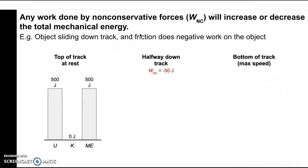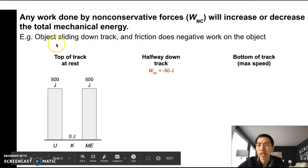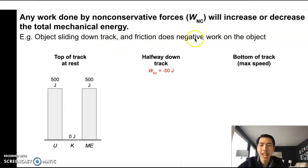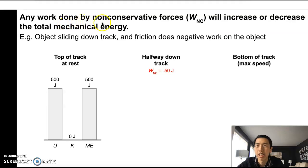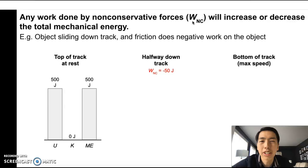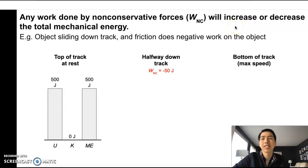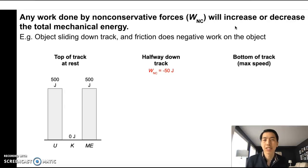What happens if there is friction? We're going to add friction here — same situation, an object sliding down a track, and friction is going to do negative work on the object. So this is the lesson today. Any work done by non-conservative forces — I'll use the symbol W subscript NC — such as friction and air resistance, will increase or decrease the total mechanical energy. If you have some other kind of force doing work on the system, it's either going to increase or decrease the number of joules. If the work done by non-conservative forces is negative, it's going to decrease the number of joules of mechanical energy.